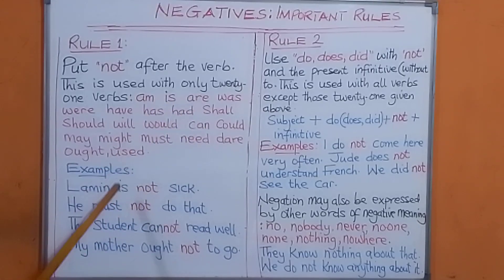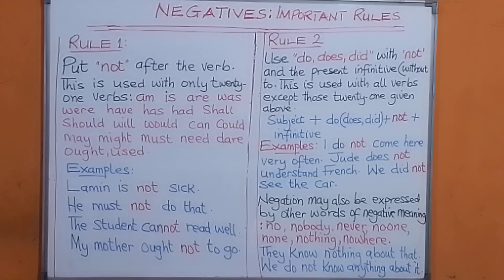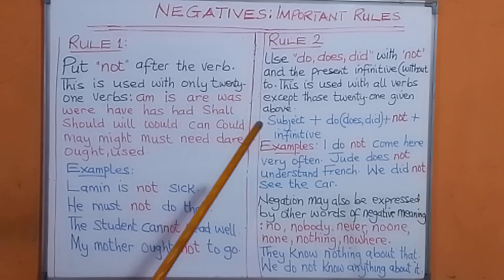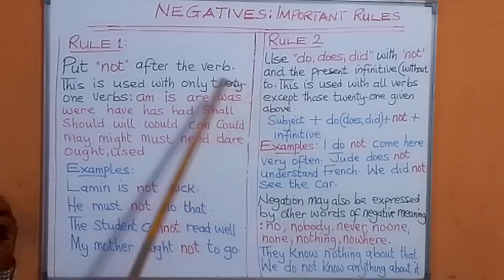The 21 verbs are there. The moment you use them — for example, 'I used not to do this,' or 'I do not do this.' You see that? So that is rule number two.